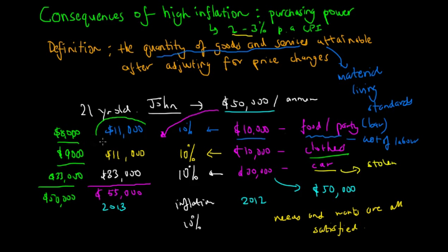As you can see, he's spending $2,000 less on food and $2,000 less on clothes. What this means is that his material living standards have obviously decreased. You can see that the quantity of goods and services attainable has actually decreased after adjusting for price changes. So what this means is his purchasing power has decreased.